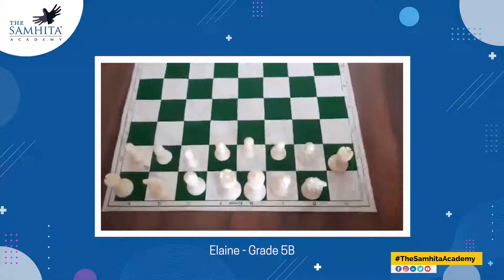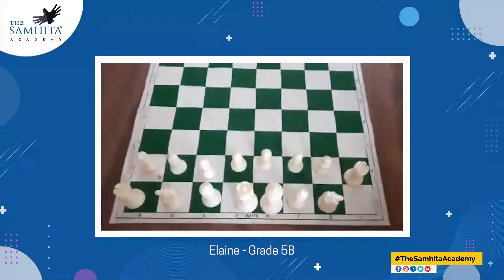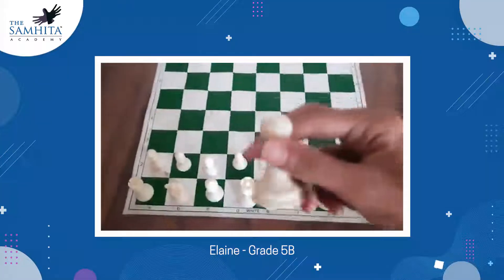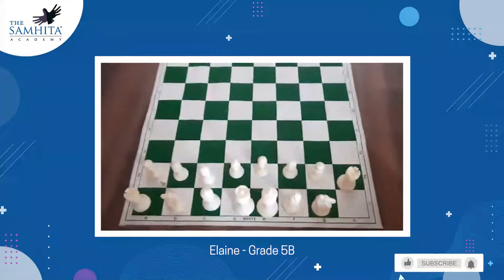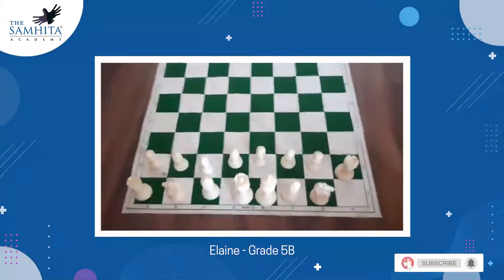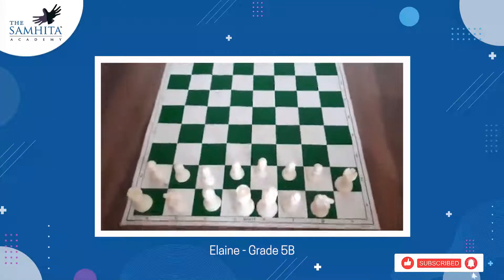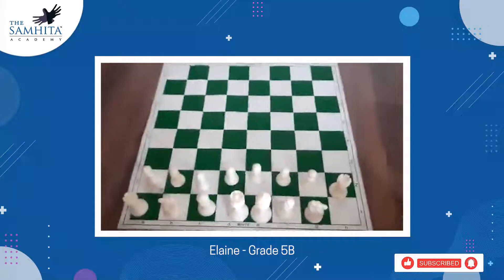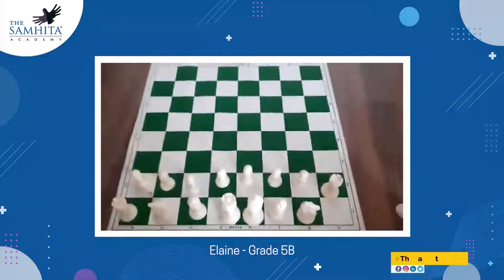For example, if a rook captures a pawn, the rook is worth 5 points but it captured only a 1-point pawn, so 5 minus 1 equals 4 — showing that addition and subtraction are also part of chess.